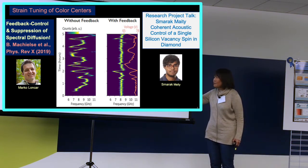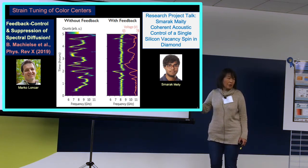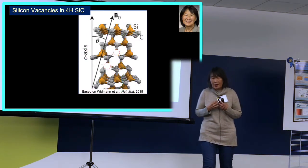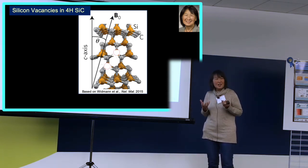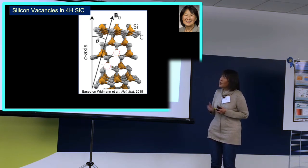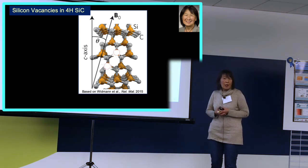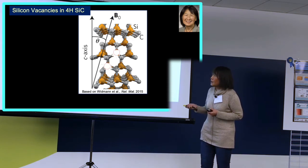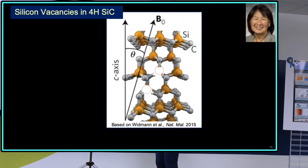SMARC will be giving one of the presentations following mine that will give you much further detail about this and the broader context. In addition, in the panoply of these defect qubits, we want to go to a very different material system — other than diamond. In this case, it's 4H silicon carbide, and the particular defect we're looking at are silicon vacancies.